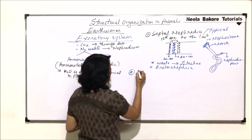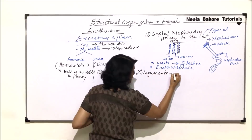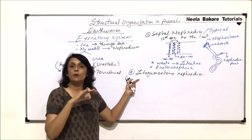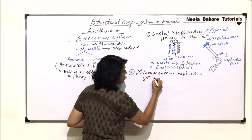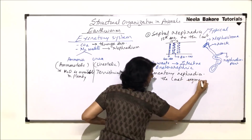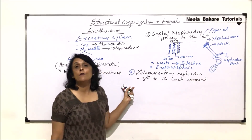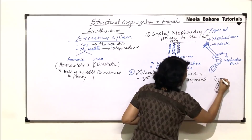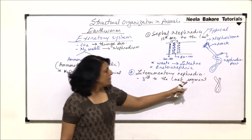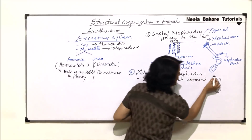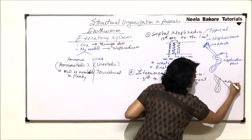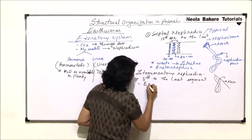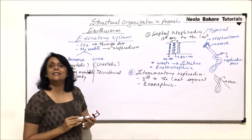The second type of nephridia are called integumentary nephridia. As the name tells us, they are on the integument, meaning the skin, and they are present from the third segment to the last. These nephridia do not have a nephrostome — they have a blunt tube-like coiled structure that opens through an aperture, and the waste is thrown directly outside the body.